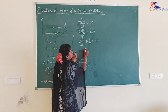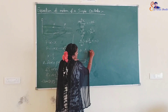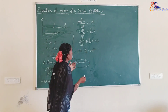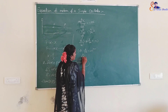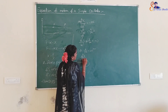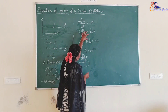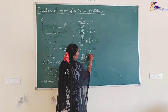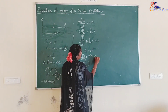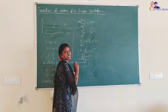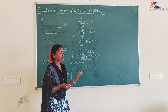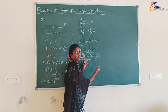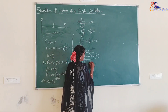Let us assume k/m = ω². Substituting into the equation, it becomes: d²x/dt² + ω²x = 0. This is the differential equation of the simple harmonic oscillator. Now we find the general solution of this differential equation.